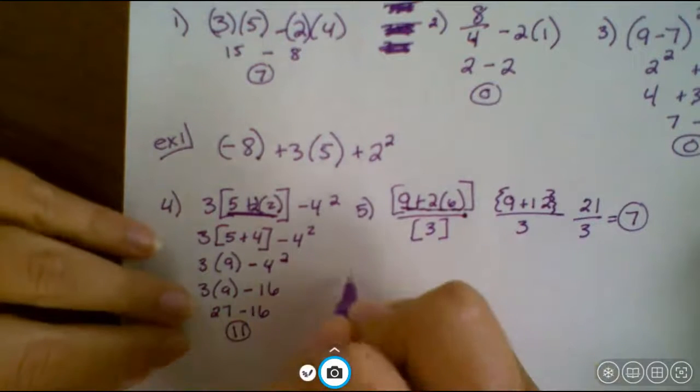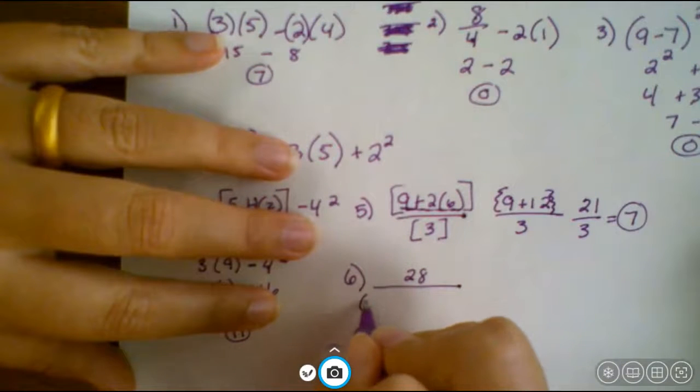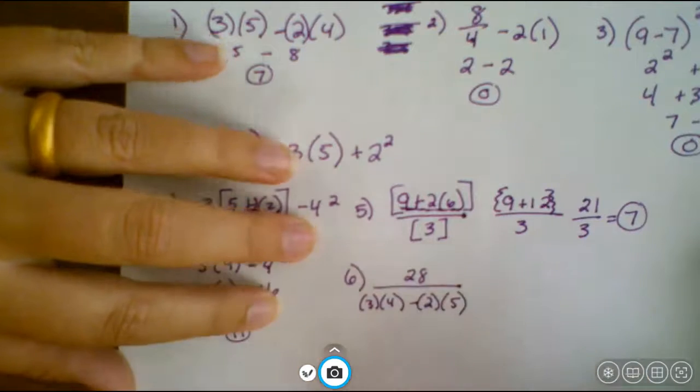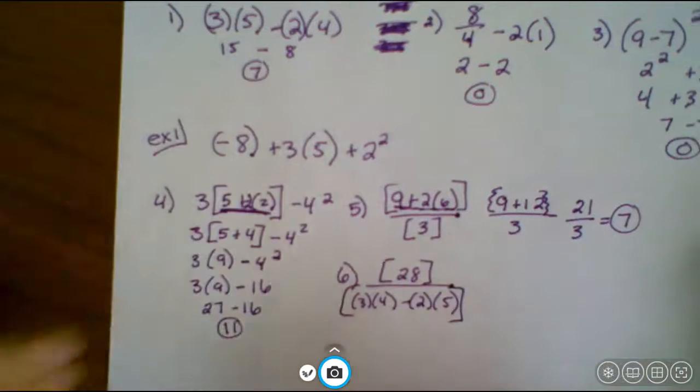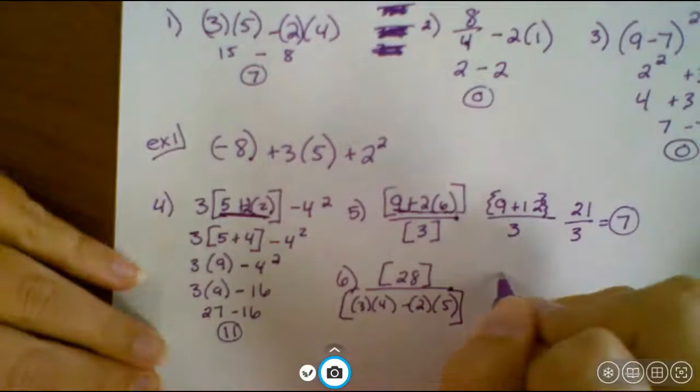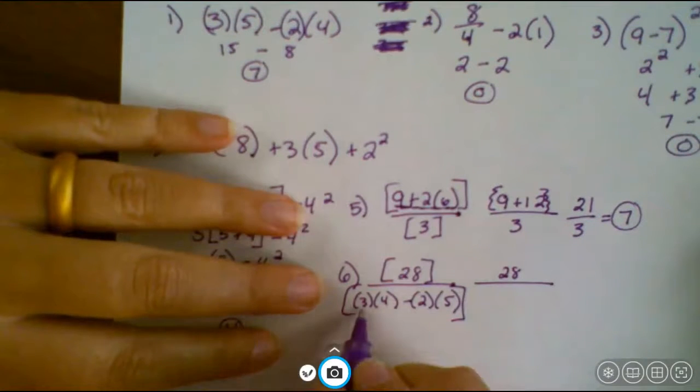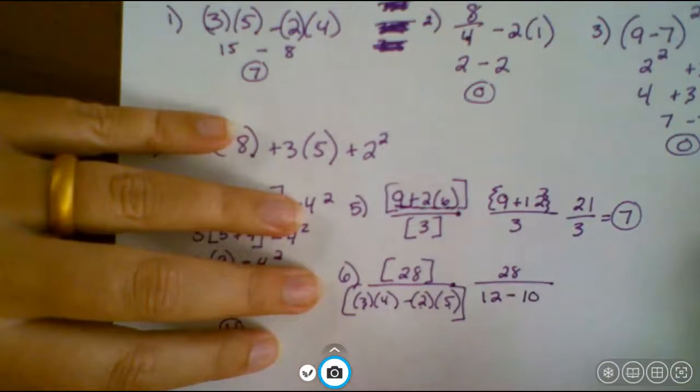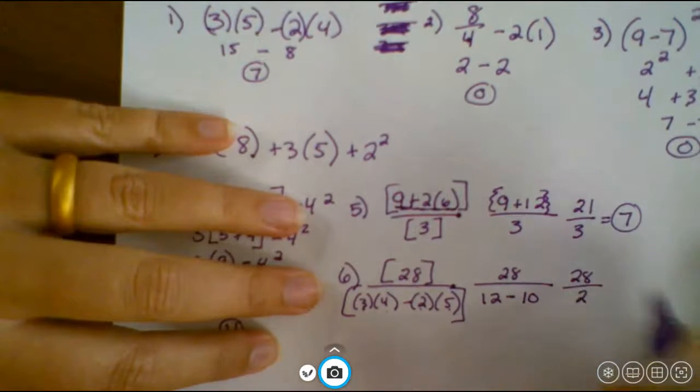All right, so number six. So 28 over three times four minus two times five. So again, the stuff on top is seen as one parentheses, the stuff on the bottom is seen as another parentheses. So we're going to start on the bottom, because the top's already simplified. So I can bring that 28 over. And then on the bottom, I need to do my multiplication first. So we have three times four is 12. Two times five is 10. Simplify the bottom a little bit more. 12 minus 10 is two. Now we can divide to get 14.